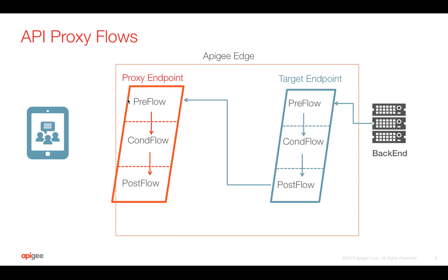In the response, there is one more flow called post-client flow, which is very interesting. The response goes directly from the post-flow to the client that made the request. Once the response goes back to the client, the post-client flow executes asynchronously. We use the post-client flow for executing policies like message logging without waiting to send the response back to the client.